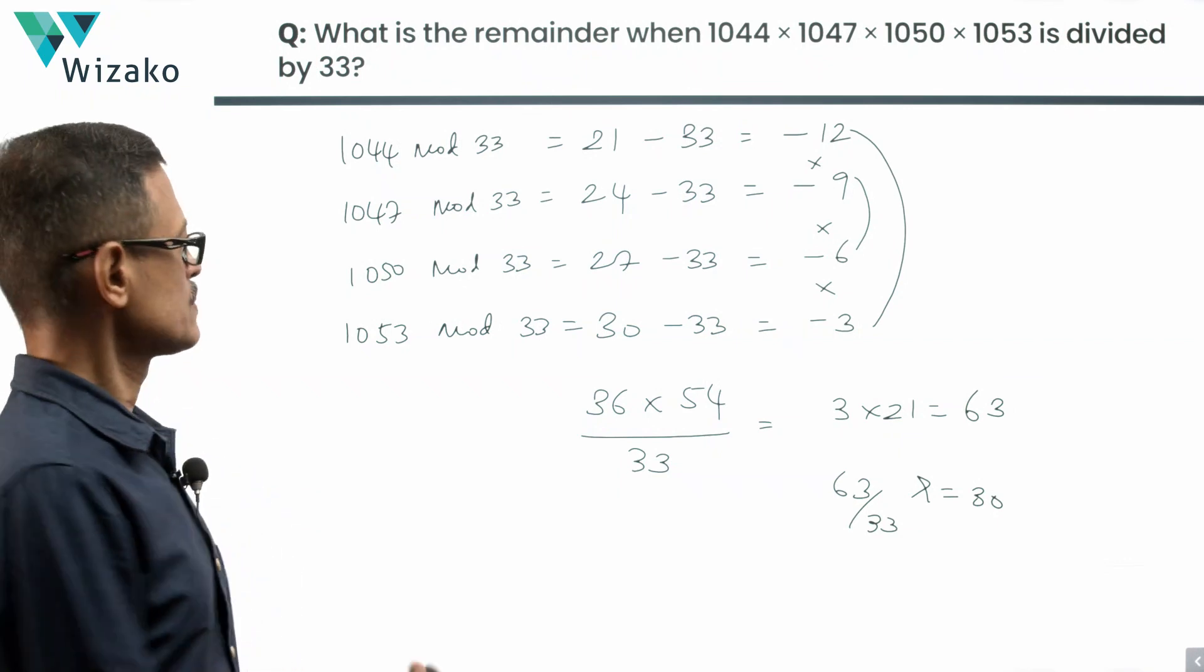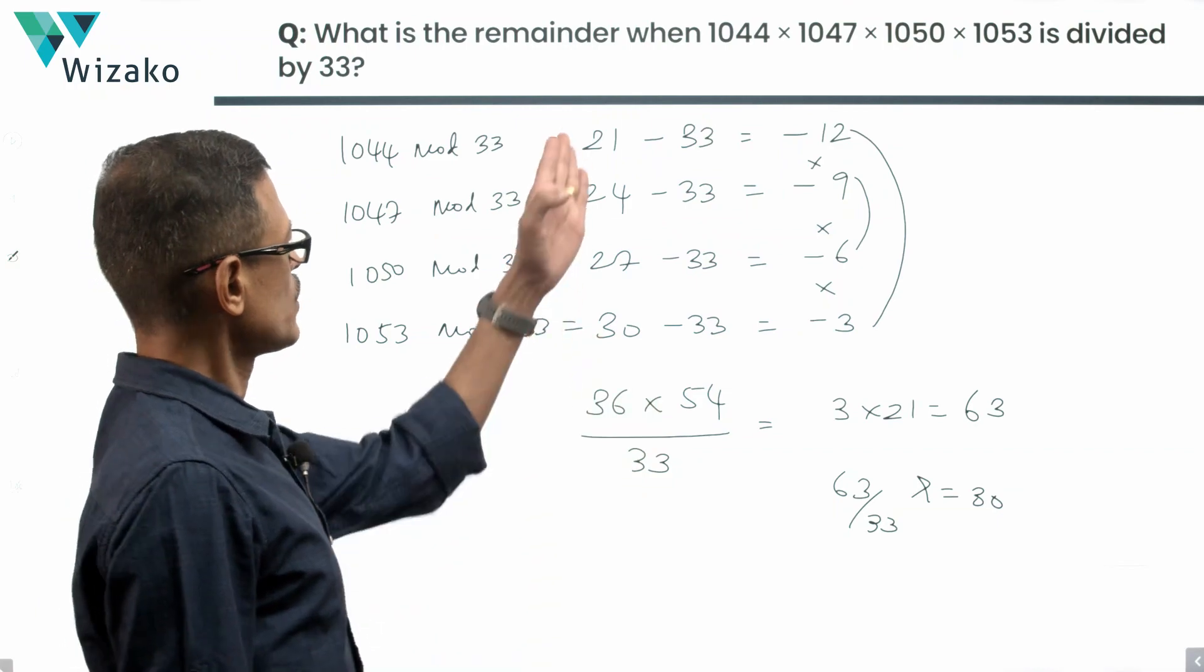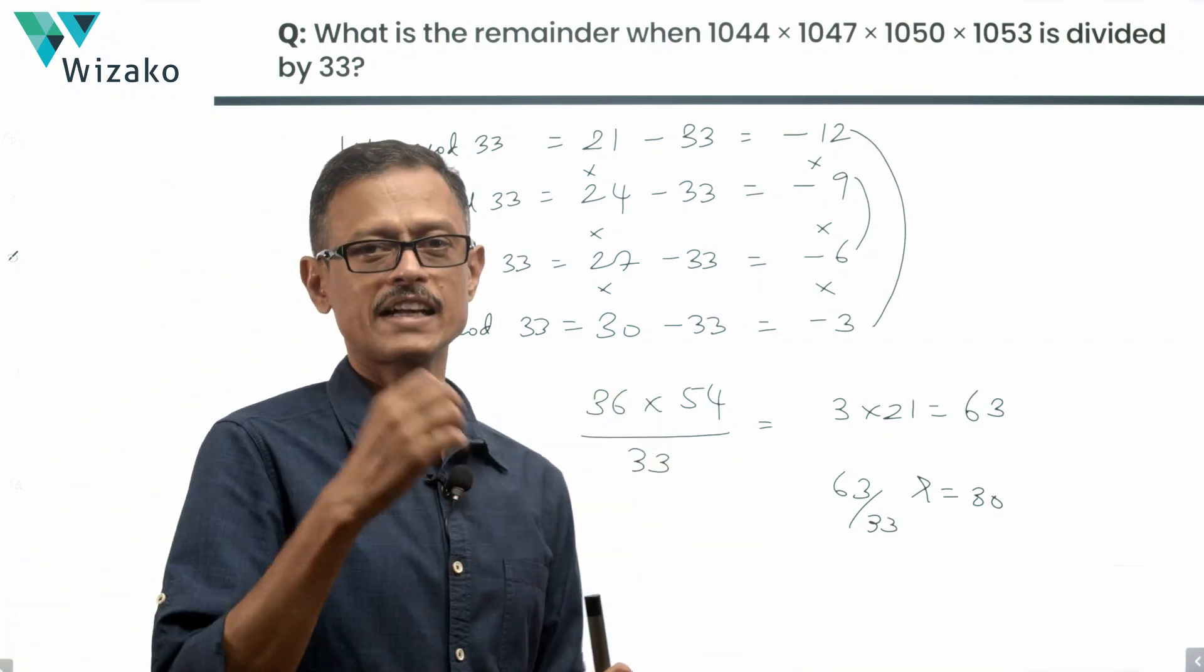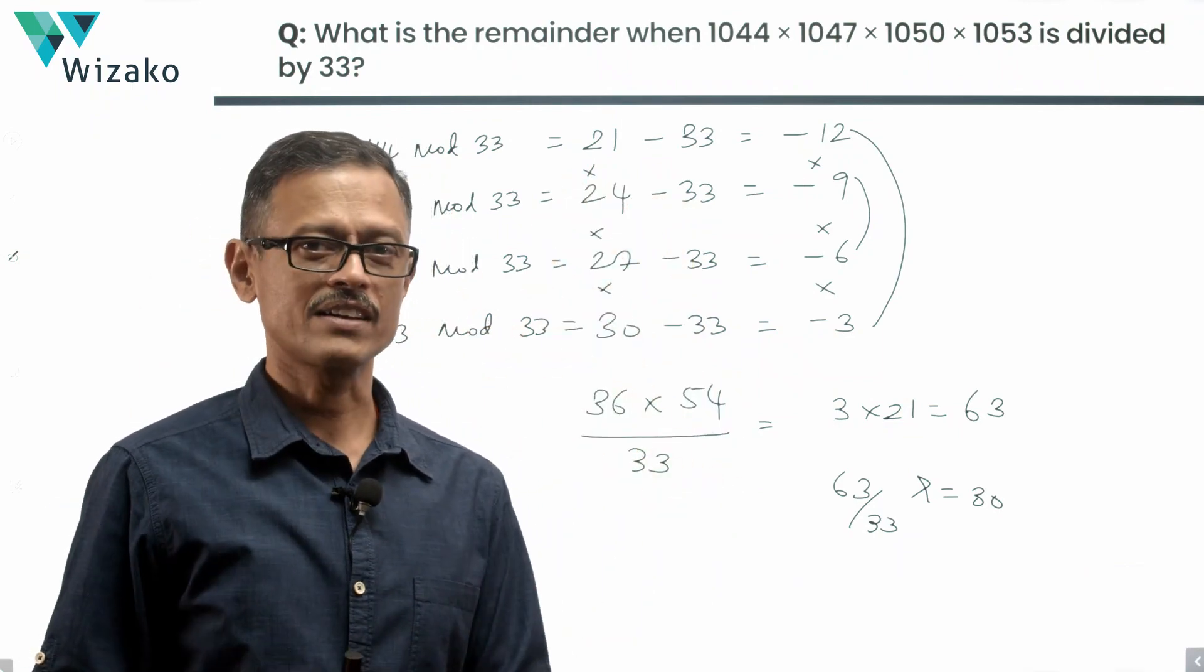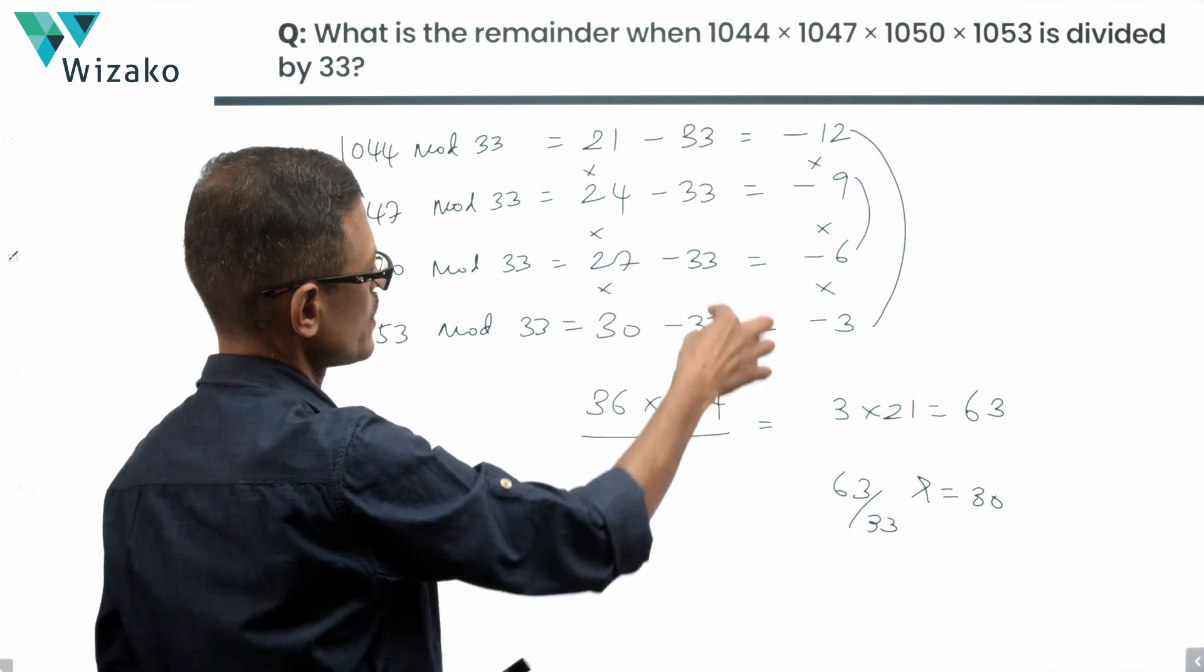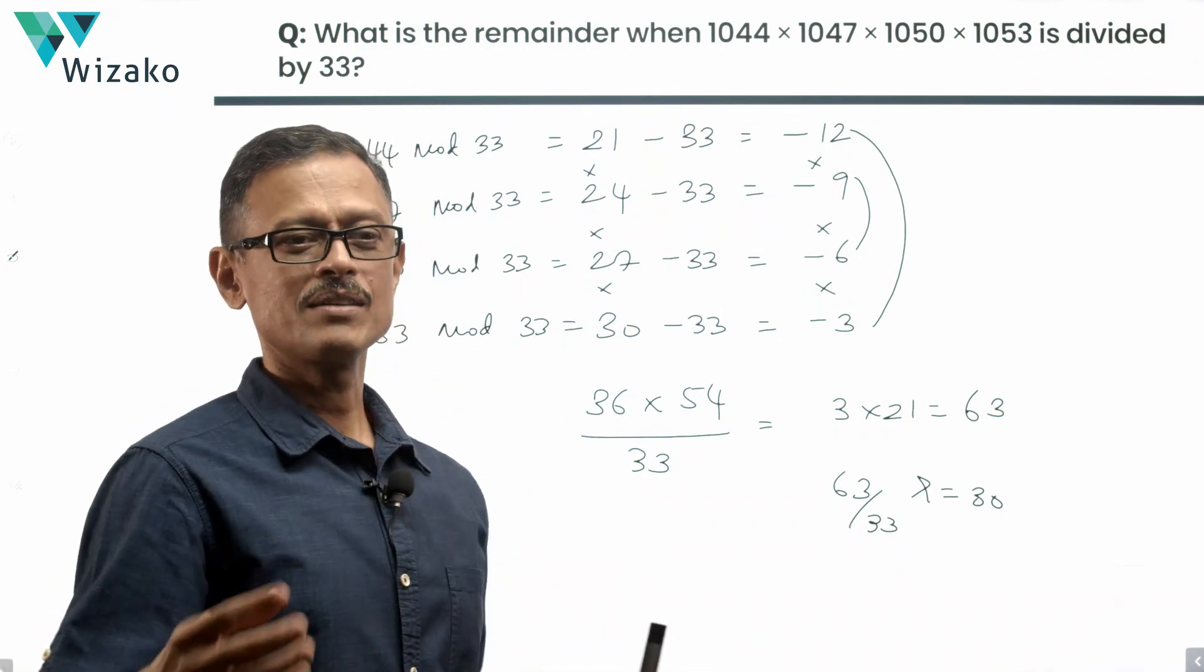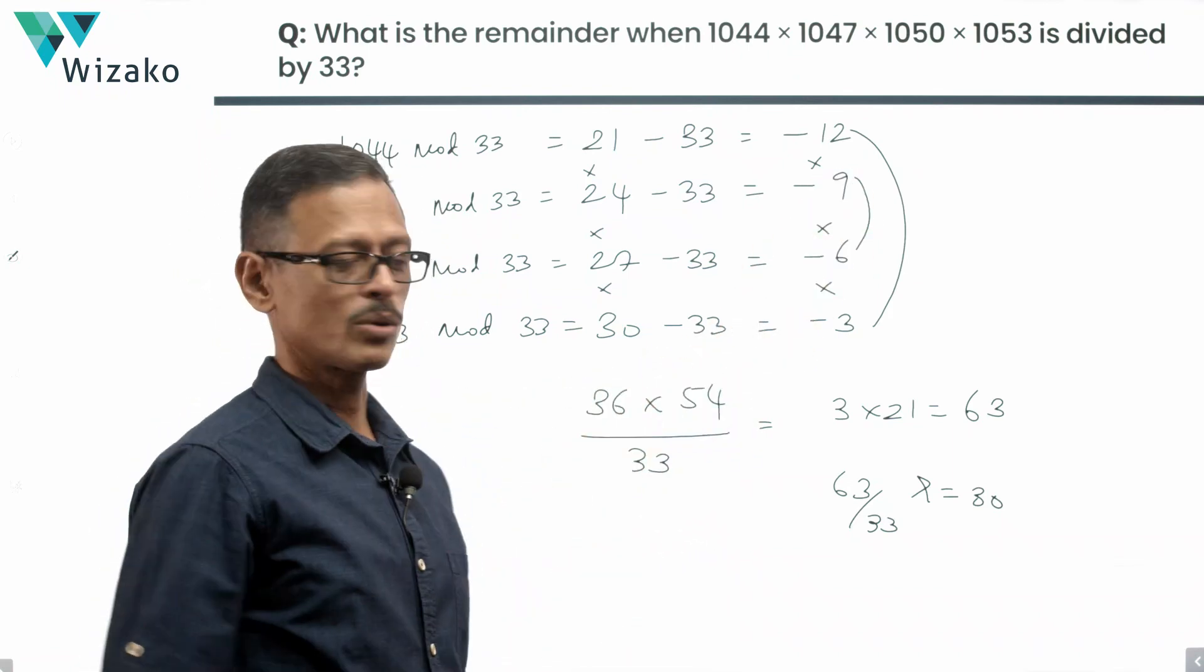Let me quickly run through this last bit once more. We found the remainders when each of these numbers is divided by 33. The product of these four remainders is going to be the final remainder, but 21 into 24 into 27 into 30 is still cumbersome. So we switched to negative remainders because the magnitudes are friendlier. We subtracted the divisor from each of these to arrive at the equivalent negative remainders. I picked the end numbers which gave me 36 and middle numbers that gave me 54.